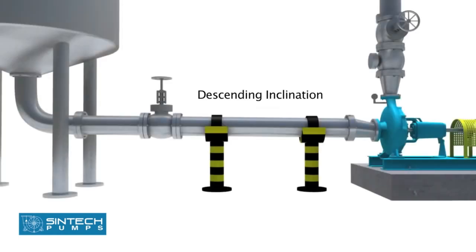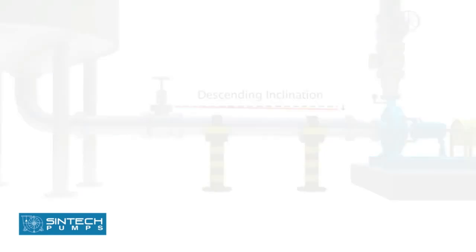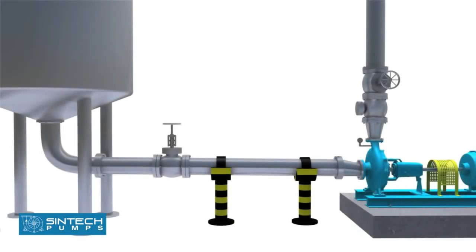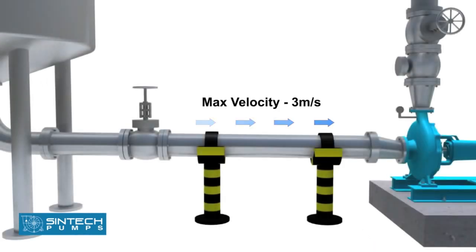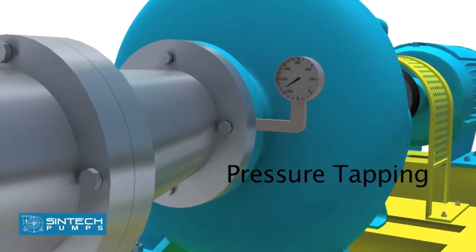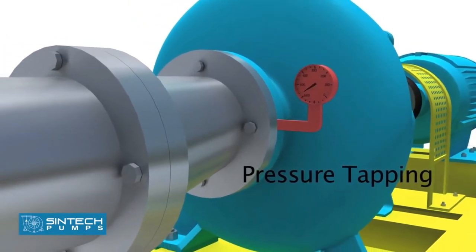The pipe supplying from the tank into the pump should have a descending inclination. The straight run of the piping leading to the pump suction nozzle should be at least 3 to 6 times the diameter of the pipe from the upstream elbow. The suction pipe should be sized to ensure a liquid velocity of not more than 3 meters per second. There should be a tapping provided for installing a pressure gauge in the suction line.